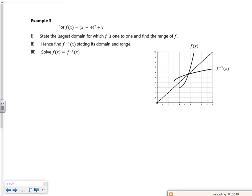So if you were going to graph x minus 4 all squared plus 3, you know that its vertex is 4 comma 3. You know it's a u-shaped graph with a vertex at 4 comma 3.